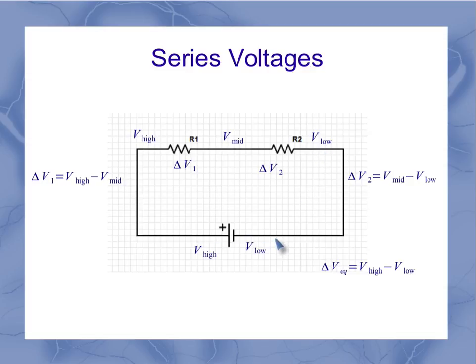I can think of that as either being the voltage on the battery, or overall, going all the way across the resistors, I'm going from high to low. Working with those equations, what we see is that the voltage equivalent is equal to the sum of these two individual voltages.